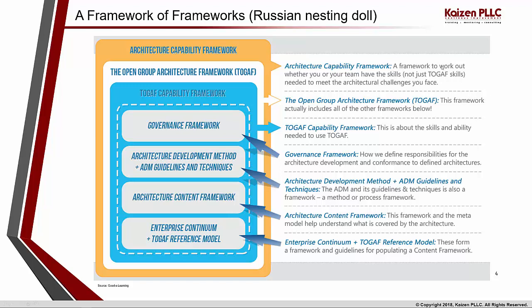It tells us a framework to determine whether you or your team have the skills needed to meet the architectural challenge — not just TOGAF skills. Then there is the actual TOGAF framework, which includes all the other frameworks. Inside that is the TOGAF Capability Framework, about the skills and ability to use TOGAF effectively. Within that is the governance framework — TOGAF recommends using COBIT — which helps define roles, responsibilities, architecture practice, conformance, decision-making authority, and so on.